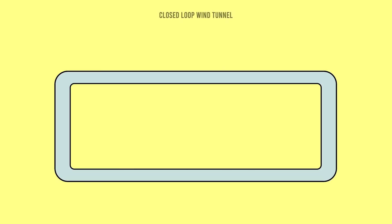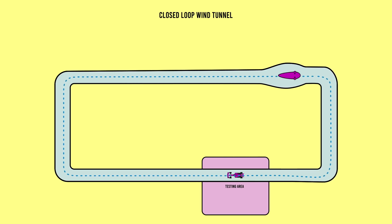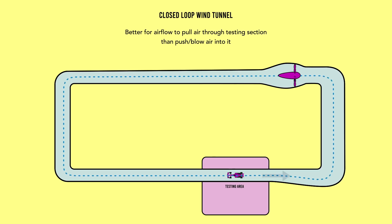F1 teams tend to use closed loop tunnels, meaning that the air circulates through a circuit round and round. These tend to be more efficient and better at maintaining a smooth airflow through the testing area where you put the car. The air is driven by a massive fan downstream from the testing area. It's a bit of a semantic point when you're in a closed loop, but it is better to pull or suck the air through the testing area than push or blow it as this best maintains smooth and steady airflow around the car.